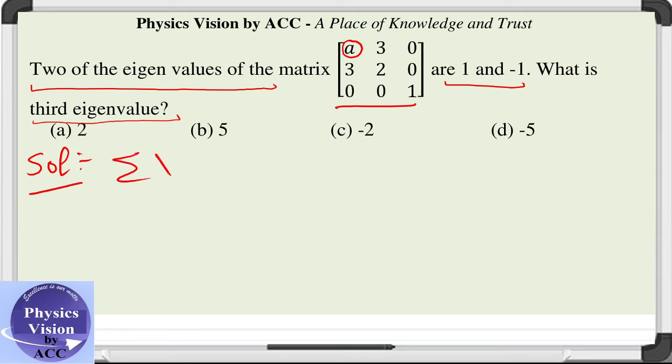Sum of the eigenvalues is equal to trace of a matrix, that is the sum of the diagonal elements. This implies that 1, let's say third eigenvalue is lambda, so 1 minus 1 plus lambda is equal to a plus 2 plus 1.